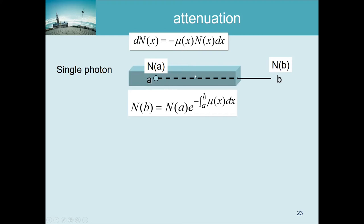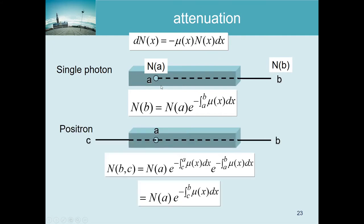The attenuation coefficient may depend on position if the material is not uniform. This is the same differential relation we saw for radioactivity, and the solution is the same: an exponential. Because mu(x) is not constant but depends on position, we get an integral in the exponent. The number of photons arriving at detector B equals the number that started at A, reduced by the exponential of the total integrated attenuation along the line.